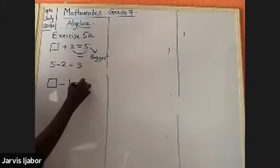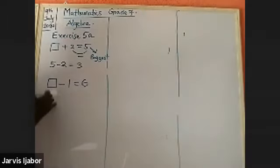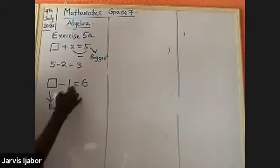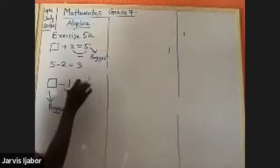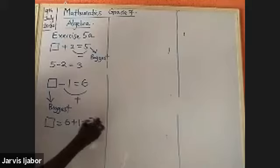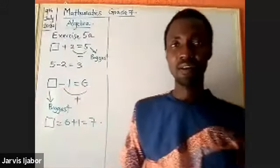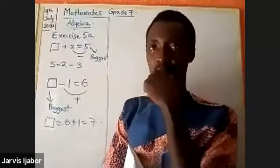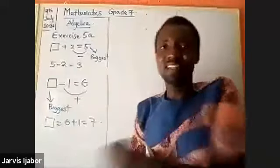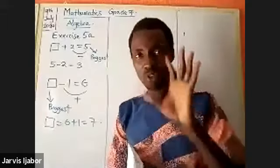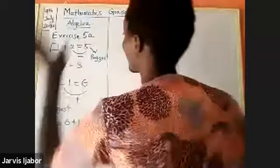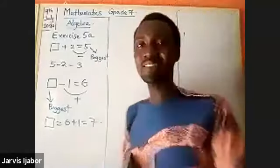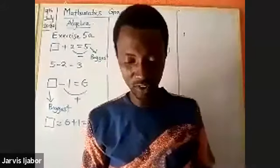Question thirty-two: box minus one equals six. When you subtract any number, the number from which you are subtracting is the biggest — so you are essentially adding. It will be six plus one, so box equals seven. When you are adding two numbers, the answer is always the biggest. When subtracting, the number you are subtracting from is the biggest. Knowing this instantly tells you what operation to perform.